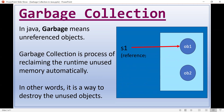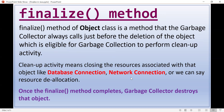Now, what is the role of the finalize method in this whole process? The finalize method of the Object class is a method that the garbage collector always calls just before the deletion of an object eligible for garbage collection, to perform cleanup. The garbage collection algorithm always calls this finalize method, available in the Object class, to destroy all objects in memory that are not used by any reference variable.